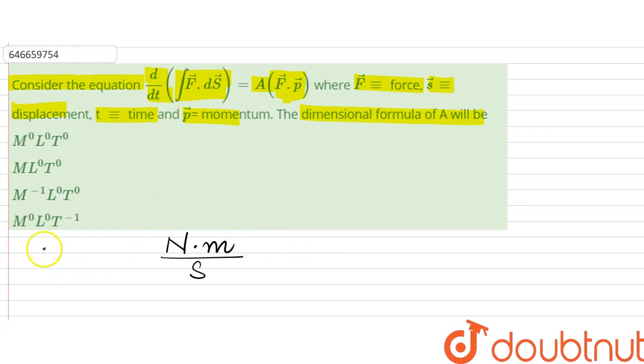So, d/dt of integration F dot ds would have this unit. And area A into F dot P. So, F dot P would have F with unit Newton and P with unit kg meter per second. So, it is kg into Newton meter per second.